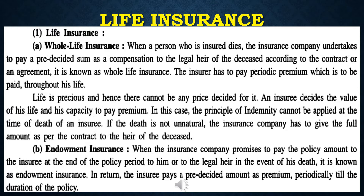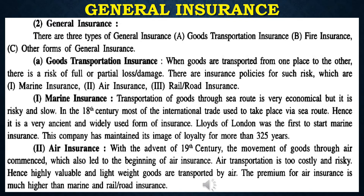Otherwise, in case of his death before that age, his heirs will get the insurance amount. This is called endowment insurance. The insured person will complete his premium payments over the given years and then receive the already decided amount. If the person dies before completion, his or her legal heirs will receive the full insurance amount.